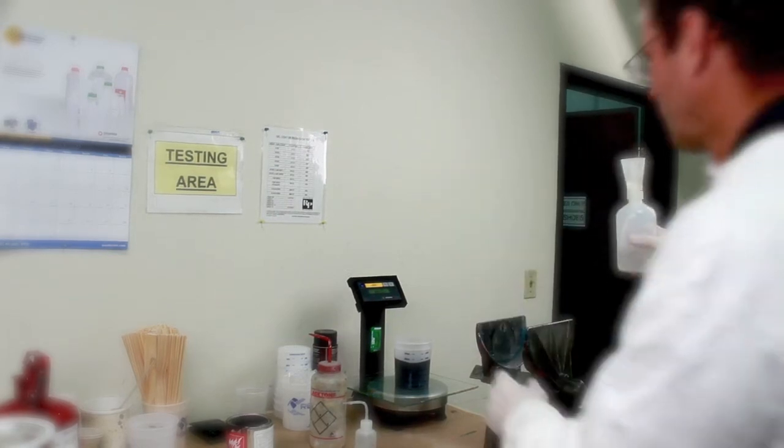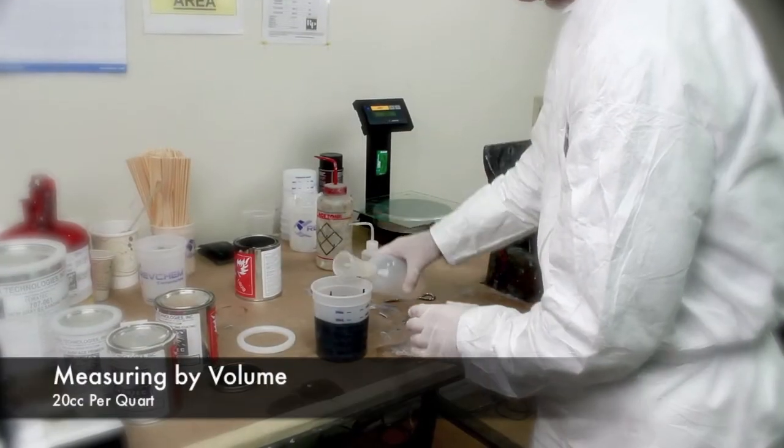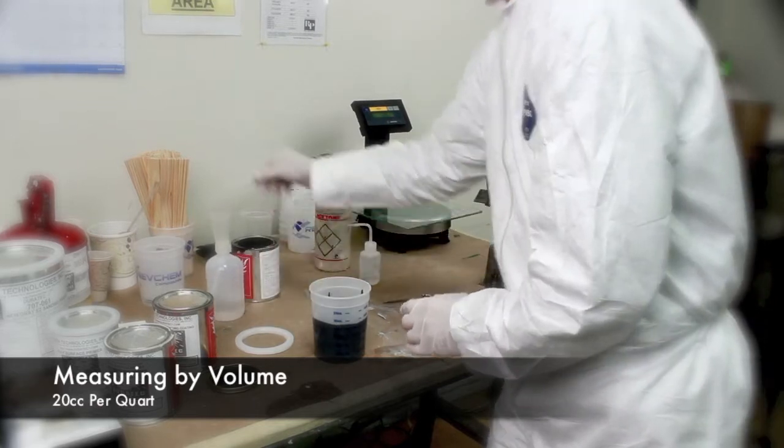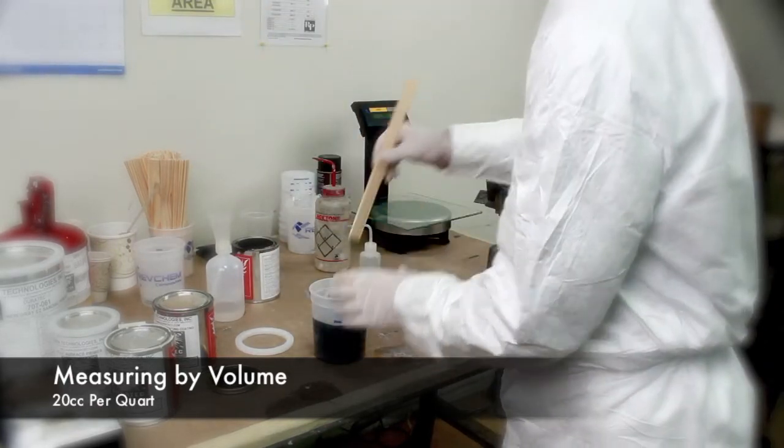Measure the catalyst carefully. We recommend using 20 cc's per quart when measuring by volume. Stir it thoroughly before you use the Duratec.